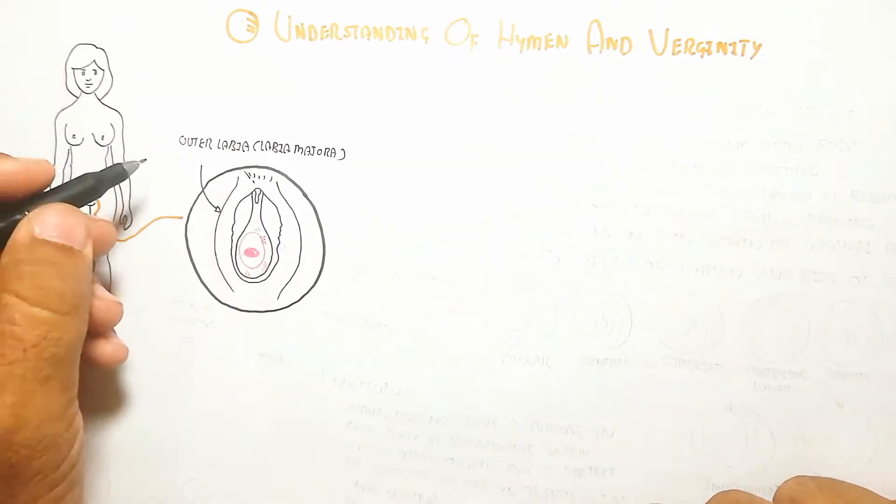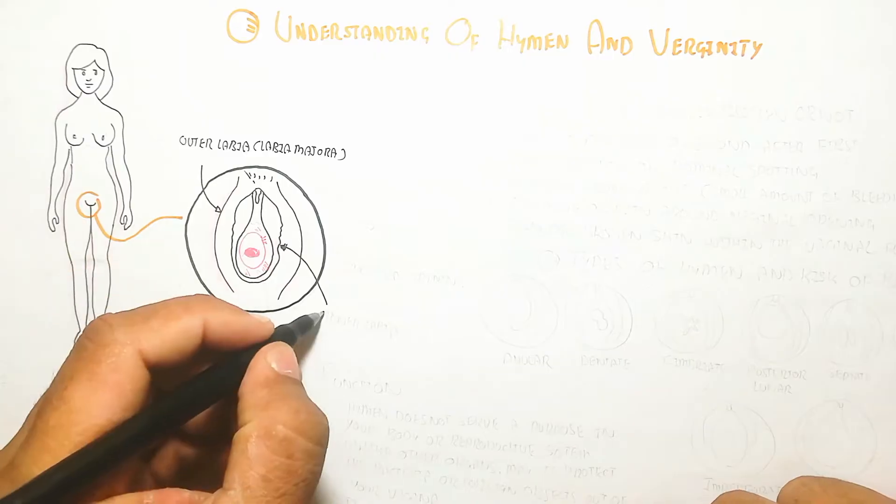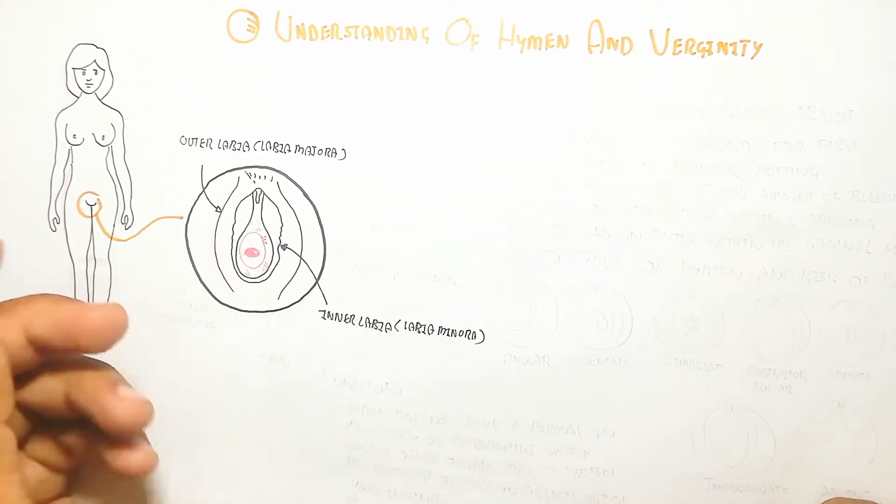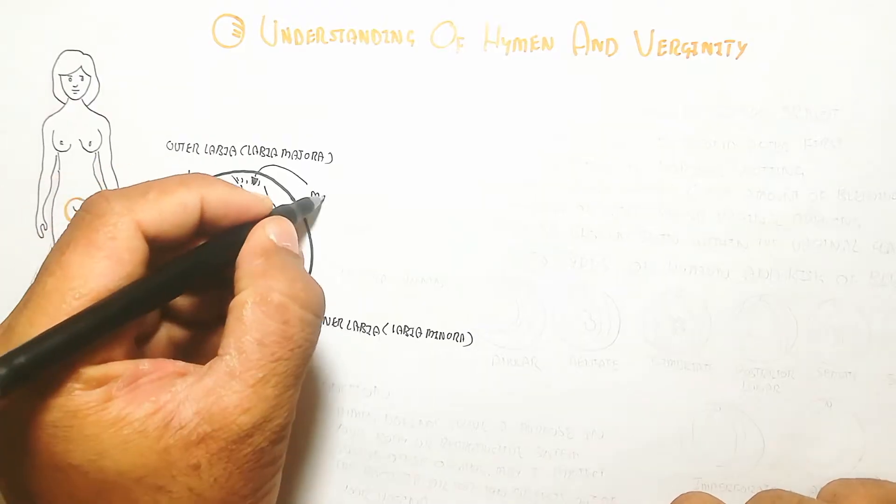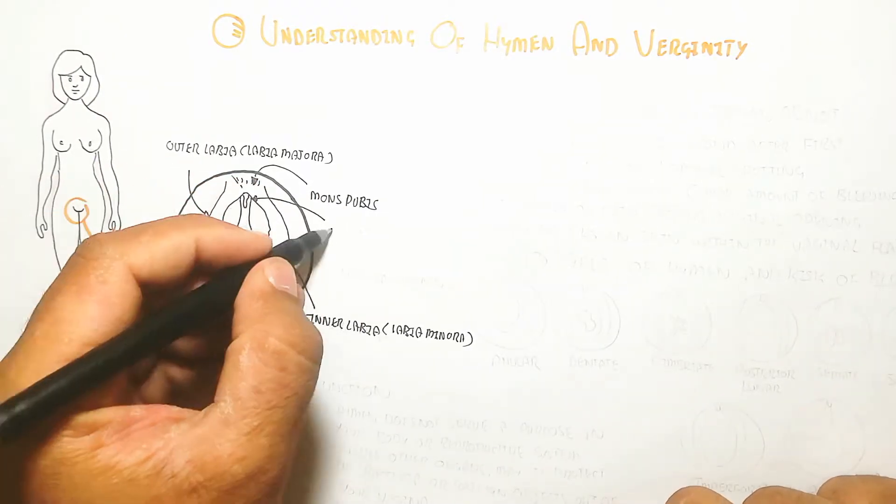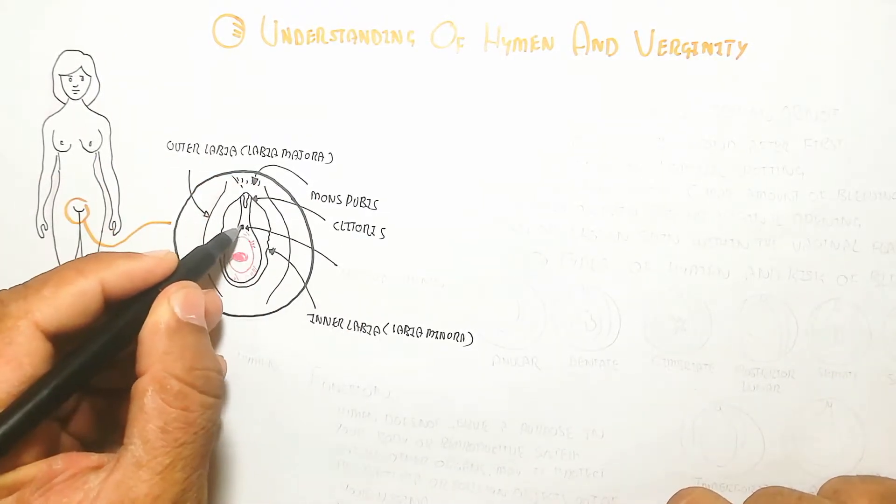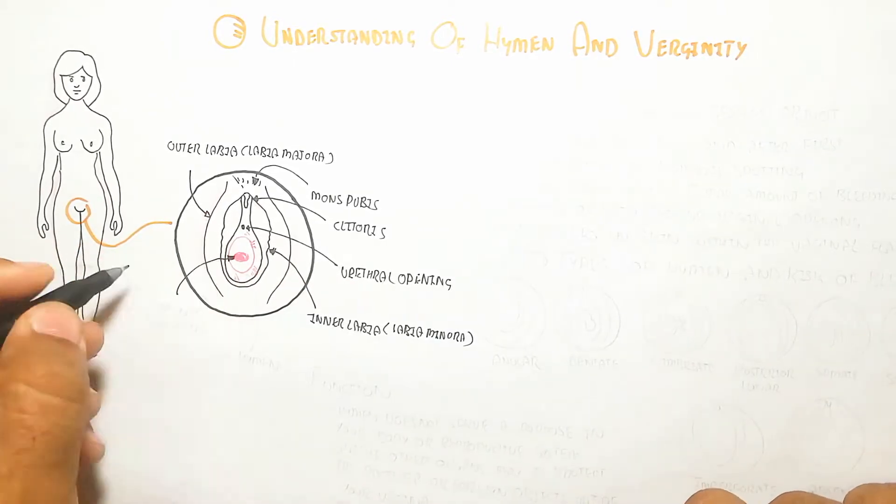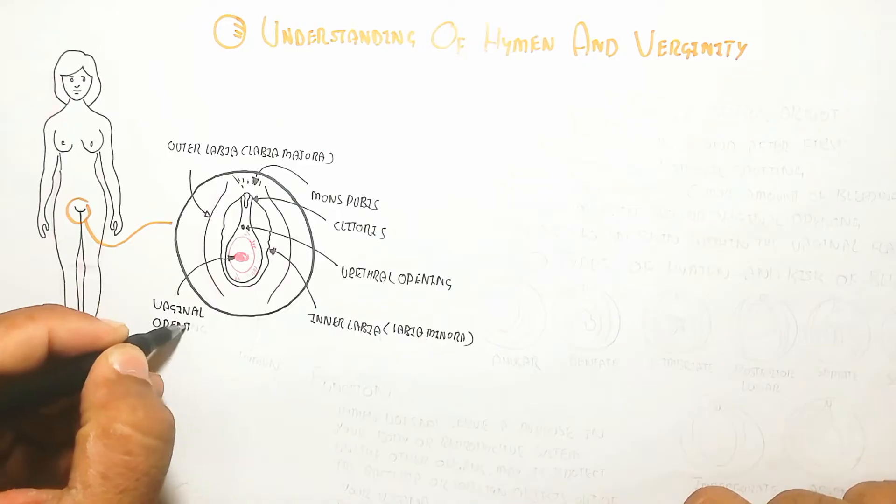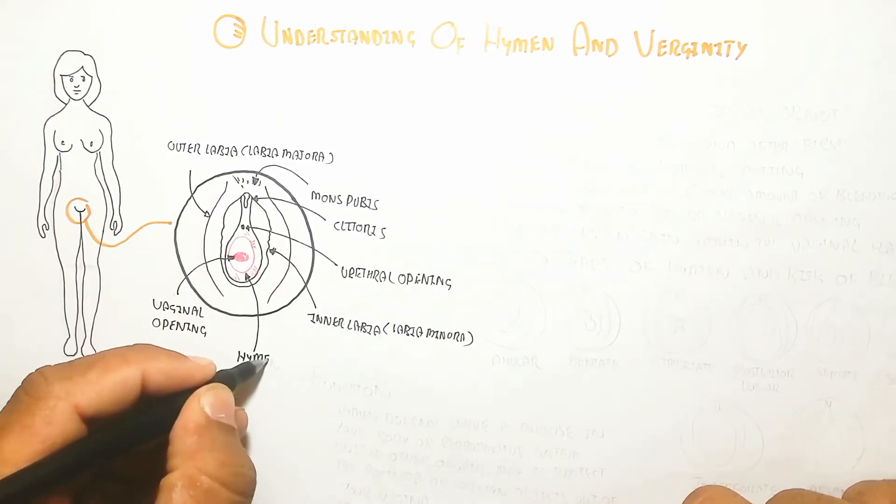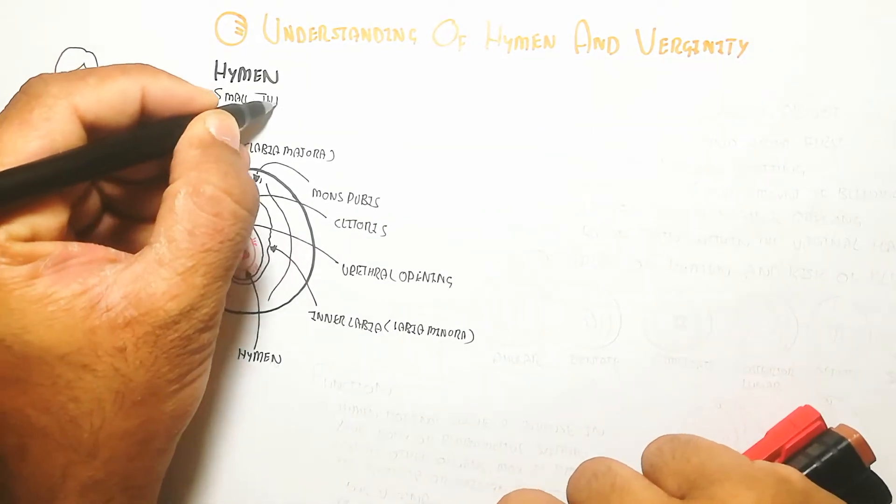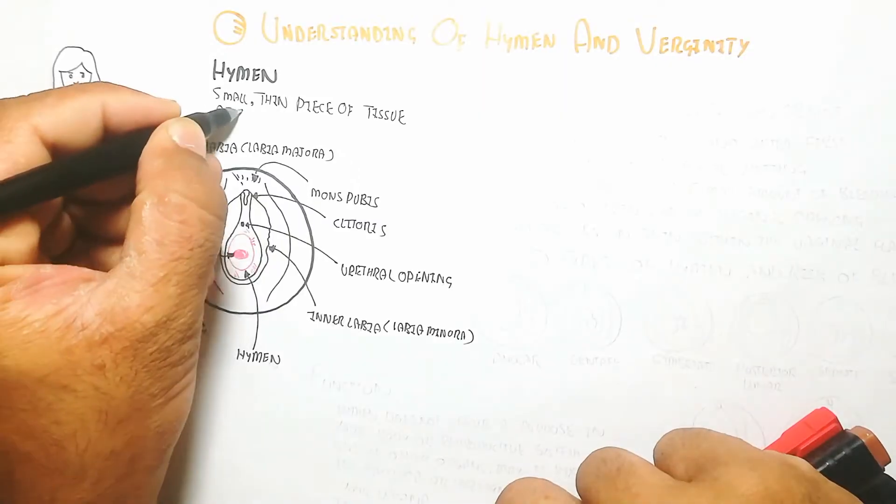The outer labia is known as labia majora, while the inner labia is labia minora. Here is the mons pubis area, the clitoris, the urethral opening, and the vaginal opening.